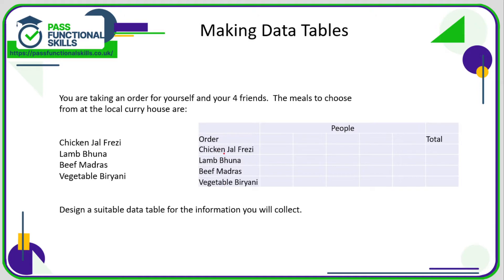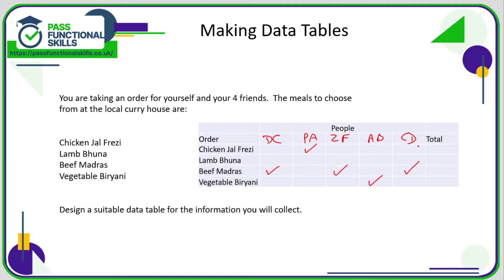You've got your four options — four different types of curry — and you're going to put in your initials here so you know who's ordered what. Now all you need to do is put a tick in each column. DC might want beef madras, PA wants chicken jalfrezi, ZF also wants beef madras — I've just used these as random initials — AD wants the vegetable biryani, and CD also wants the beef madras.